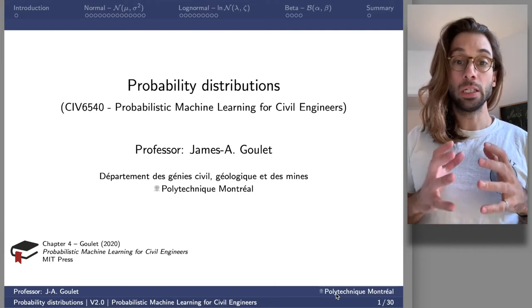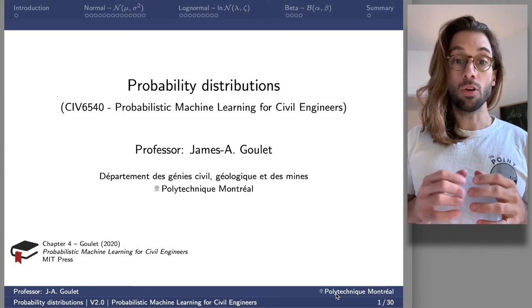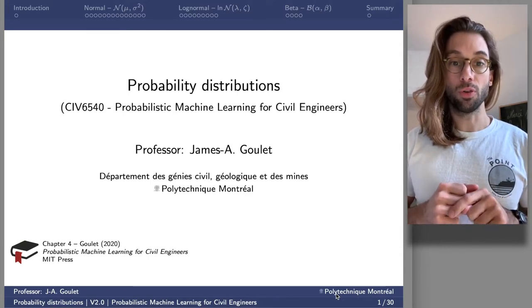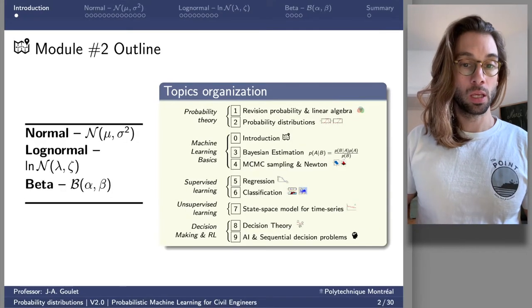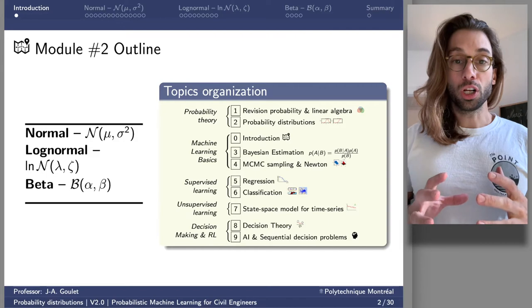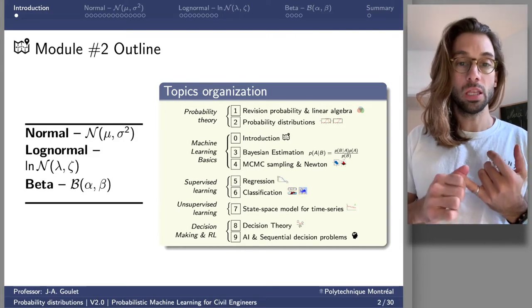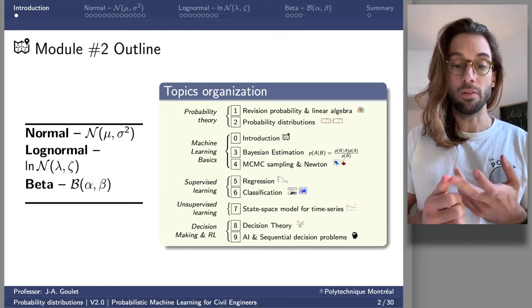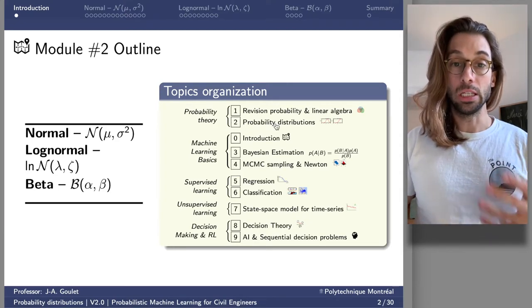Together we're going to look at the probability distributions we'll be using in the subsequent module. The reference for this class is chapter four of the book 'Probabilistic Machine Learning for Civil Engineers.' We're going to cover three main distributions: the normal, the log-normal, and the beta PDF. This is the second module related to probability theory where we look at probability distributions.